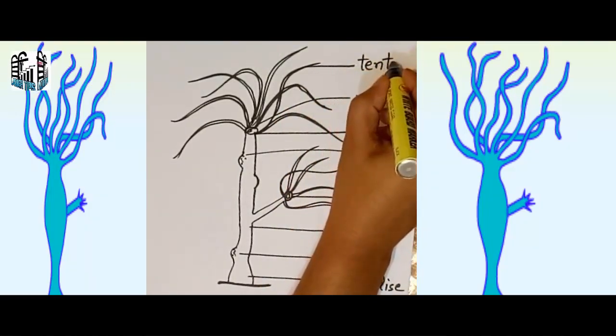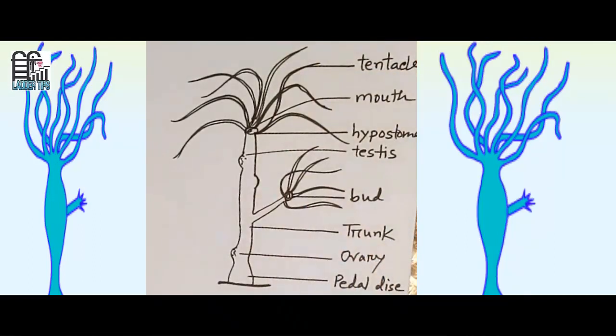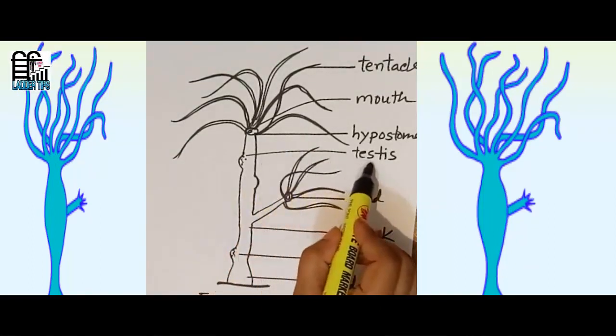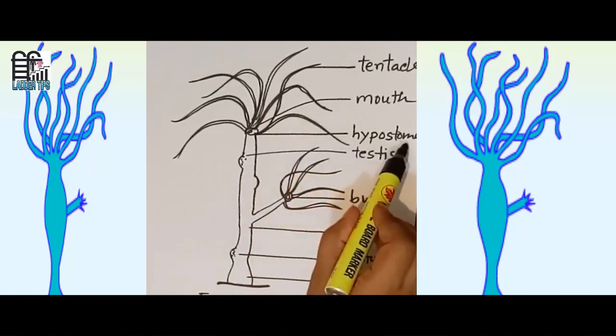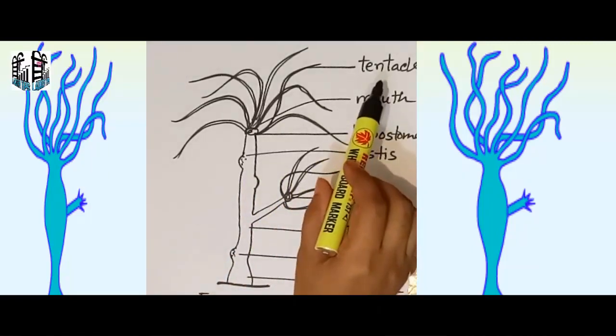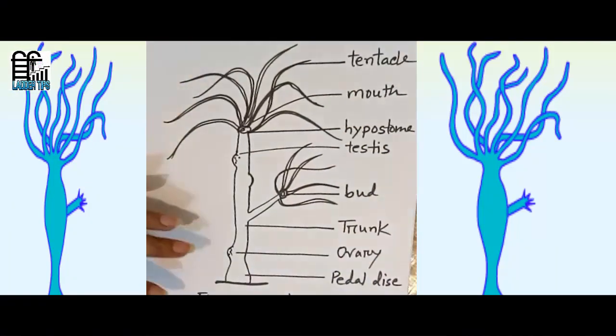Well, so again I'm going to the summary: pedal disk, ovary, trunk, bud, testis, and this is the external feature or structure of Hydra.